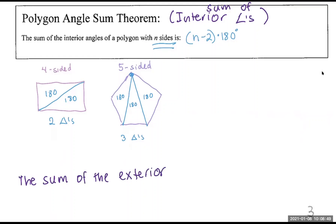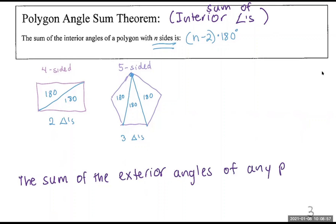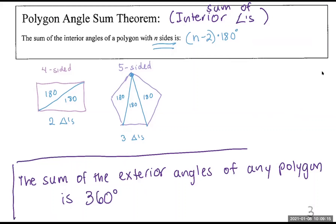So the sum of the exterior angles of any polygon is 360 degrees. This in itself is not a formula. It's just to say if I add all the exterior angles of a polygon, it's going to always end up with 360 no matter how many sides I have. So go ahead and box that.